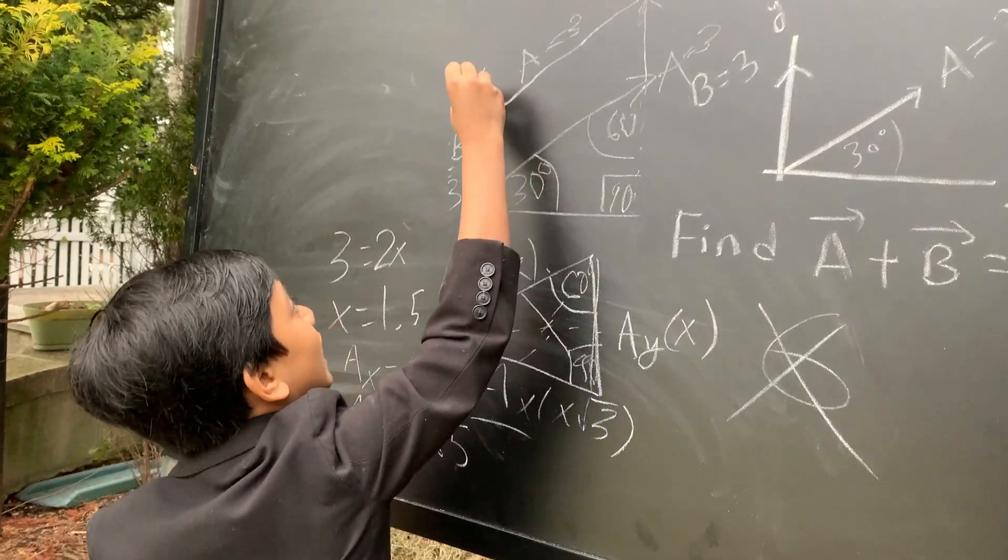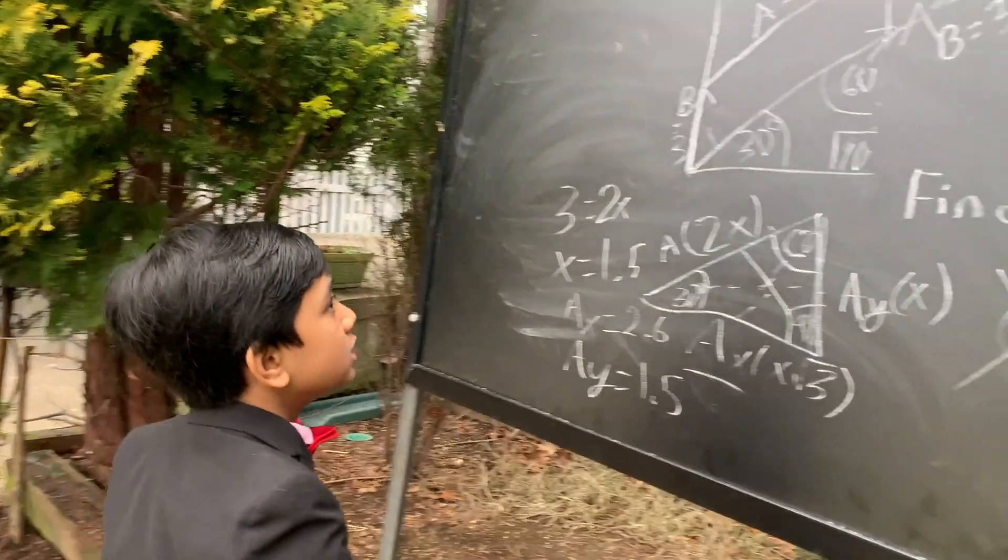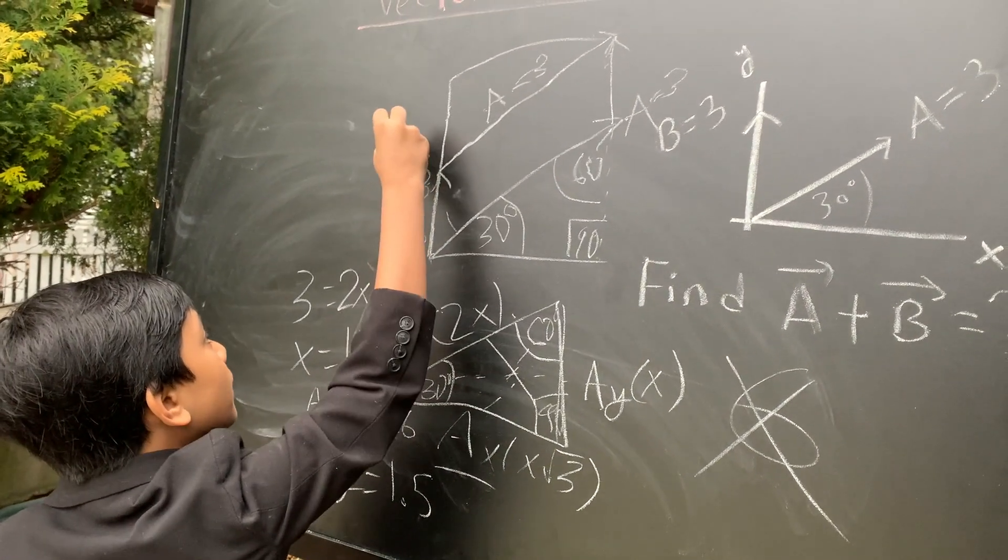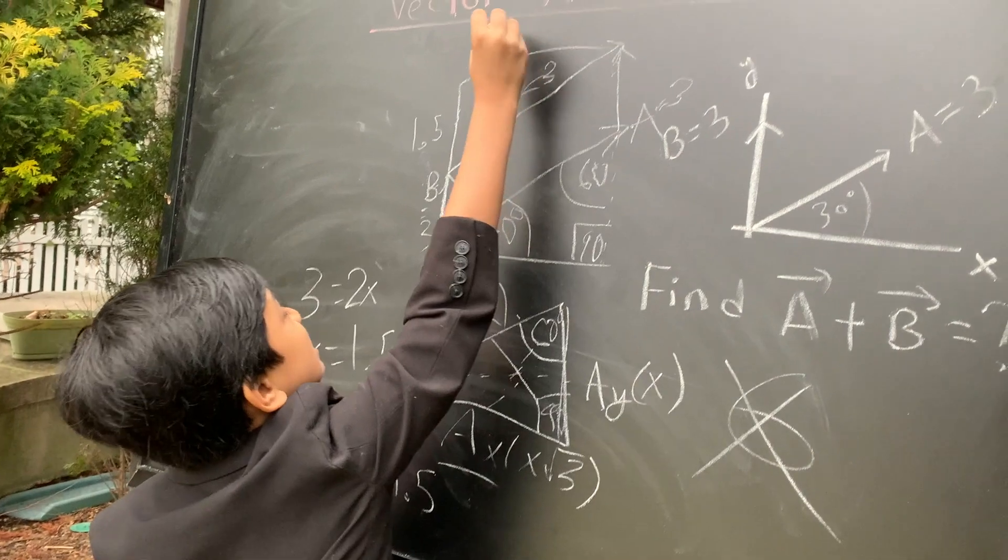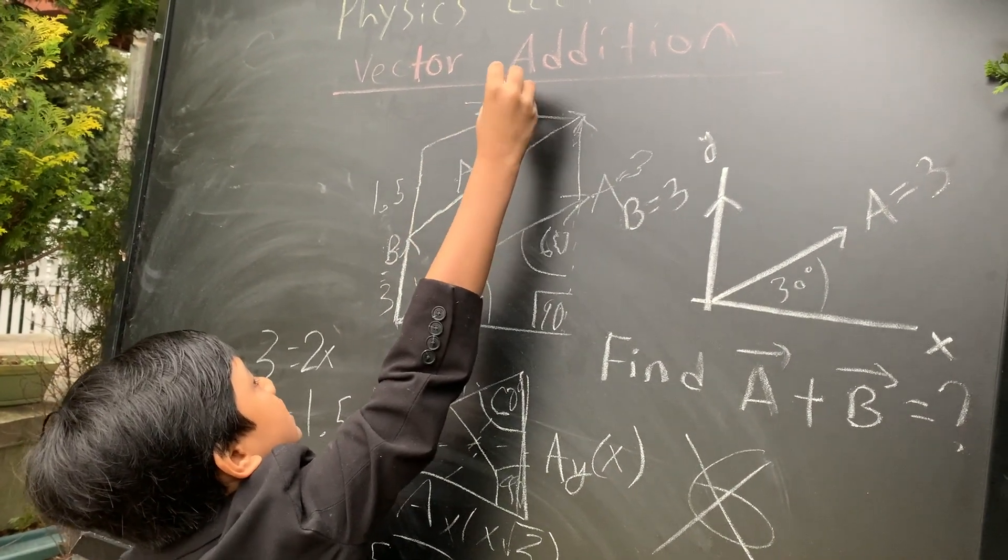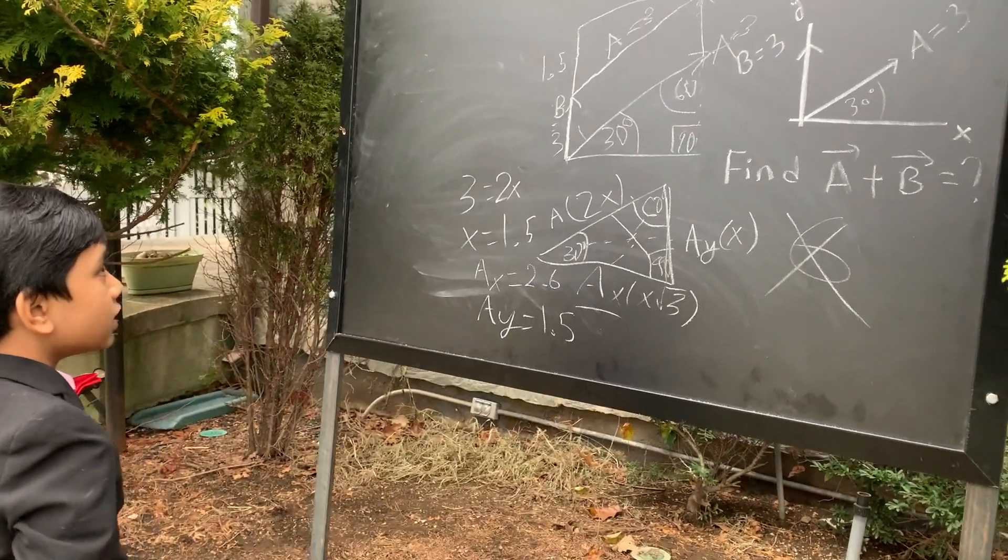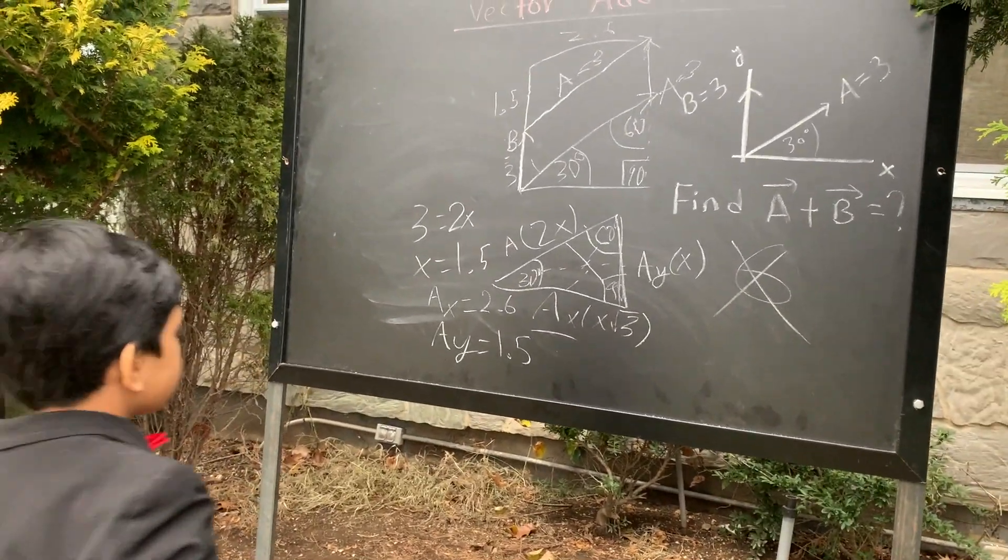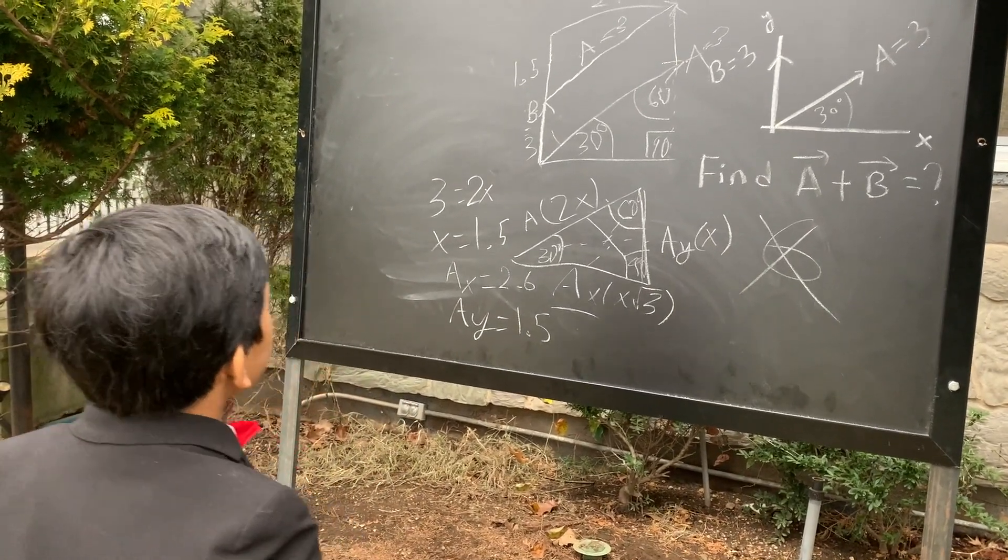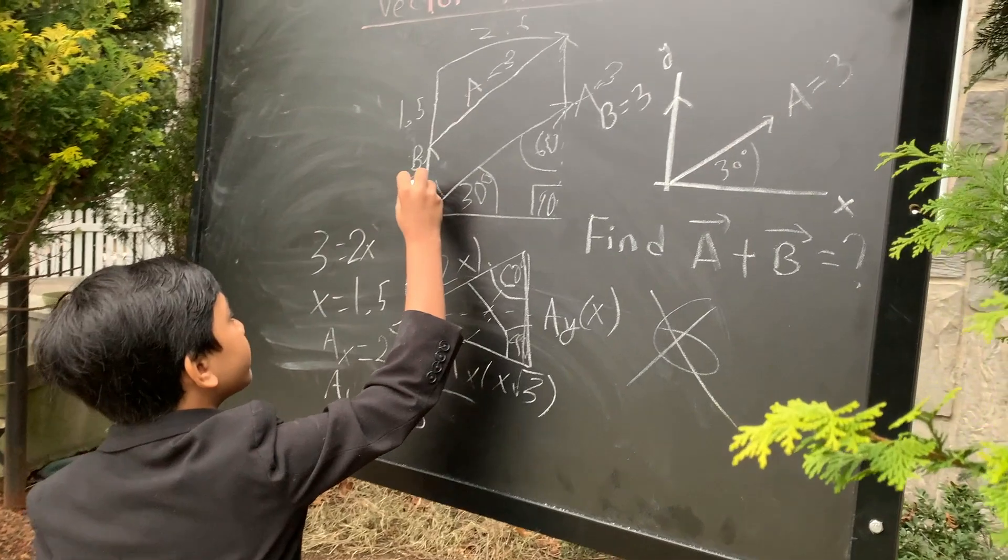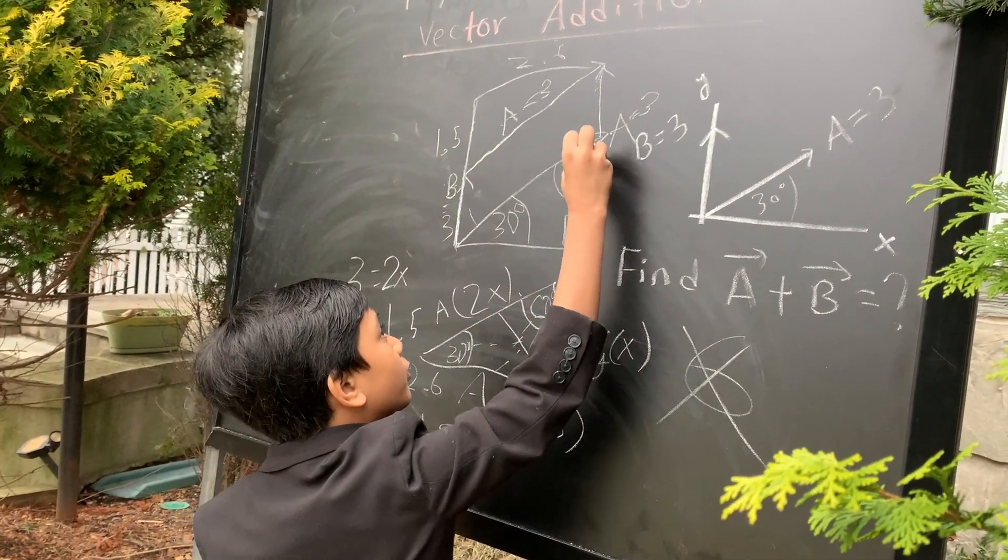However, this stays the same since this triangle is also congruent. So, we can put 1.5 here as Y, and then 2.6 here as X. Alright. So, now, what can we do? Well, we know that since this is 4.5 and we have a rectangle on our hand, this should also be 4.5.